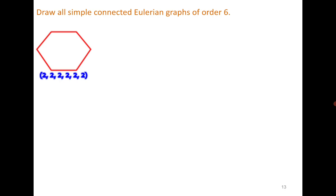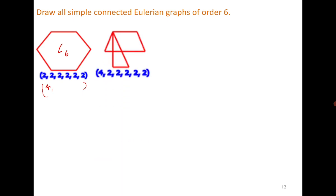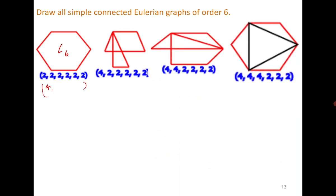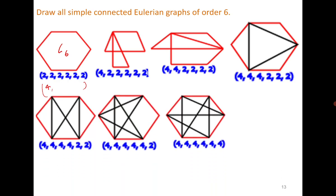Since the graph is connected, degree 0 is not possible, so the least degree is 2. The simplest degree sequence is (2,2,2,2,2,2), which corresponds to the cycle C6. You can then keep adding edges: the next option is a sequence with one vertex of degree 4 and all remaining of degree 2, and you check whether each such sequence is graphical. Continuing in this way, 7 graphs are found.